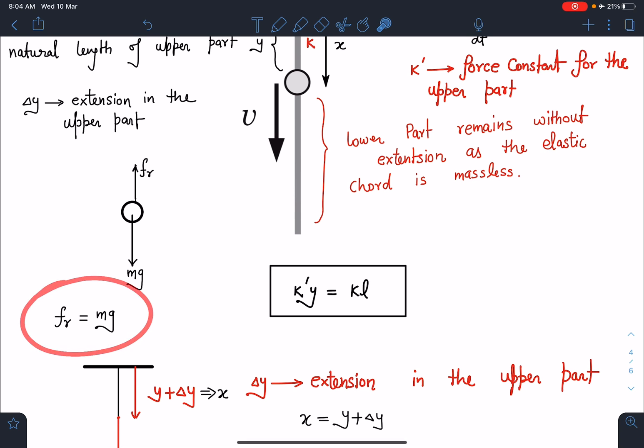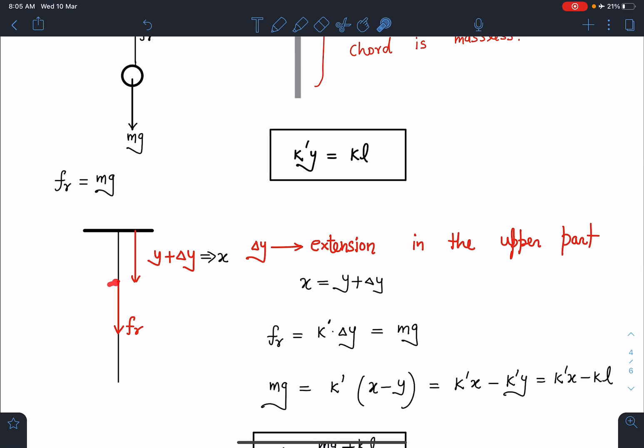Here you can see this elastic cord is massless, so this friction is also equal to k delta y, k of upper part which is k dash delta y, and this should be equal to mg as well. And already I have told you that this x is nothing but upper part natural plus extension, y plus delta y.